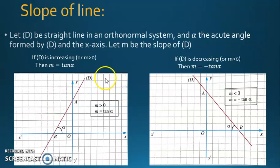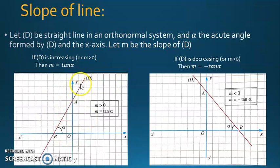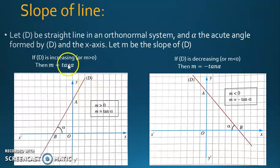Now for the relation between trigonometric ratios and the slope of a straight line. Let D be a straight line in an orthonormal system, alpha the acute angle formed by D and the x-axis, and M the slope of D. If D is increasing (slope positive), then M equals tangent alpha. If D is decreasing (slope negative), then M equals minus tangent alpha.